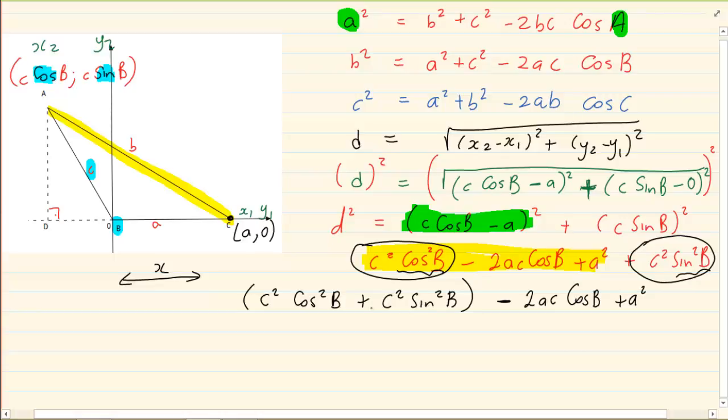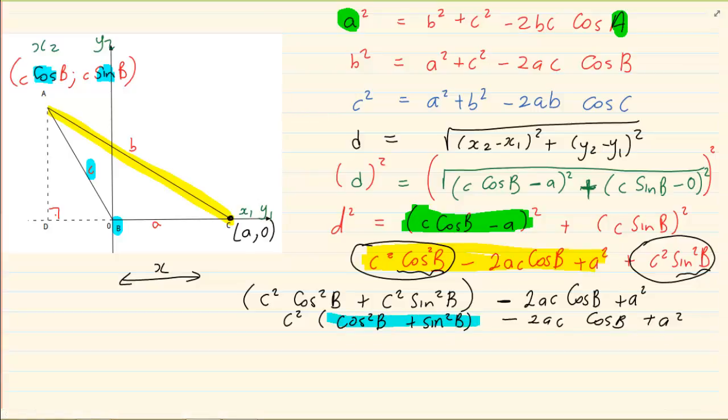Now if you look at this group, if we take out C squared as a common, I am left with cos squared B plus sin squared B minus 2 AC cos B plus A squared. Now from your identities, we know that cos squared plus sin squared is equal to 1. So if that is 1, what are we left with? We are left with C squared minus 2 AC cos B plus A squared.